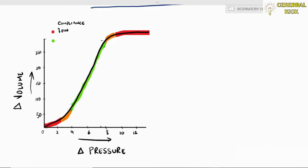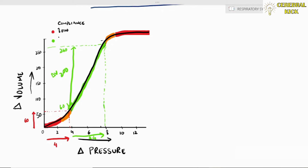In the red zone (low compliance), a pressure change of 4 accommodates only 60 ml of volume. But once it reaches the green zone, the same change in pressure generates 200 ml of expandability — this is the high compliant system of the lungs.